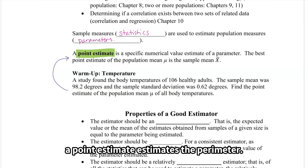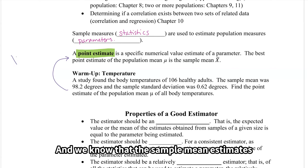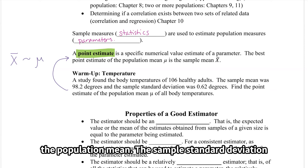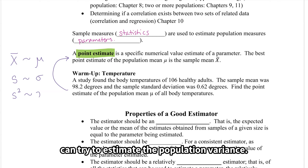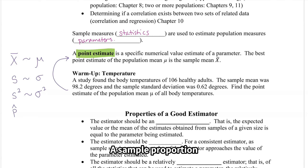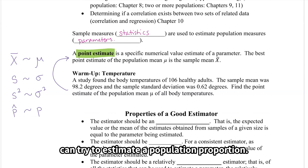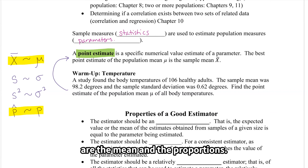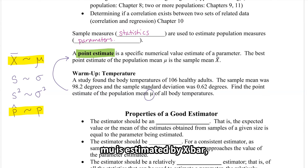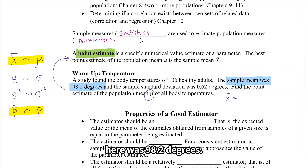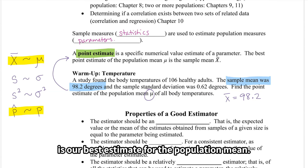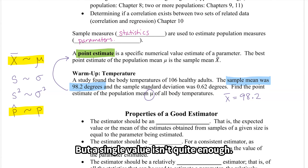We just said that a point estimate estimates the parameter. We know that the sample mean estimates the population mean. The sample standard deviation can try to estimate the population standard deviation, the sample variance can try to estimate the population variance, and a sample proportion can try to estimate a population proportion. So here, if we're finding the point estimate of the population mean mu, mu is estimated by x-bar, and we know that the sample mean was 98.2 degrees.